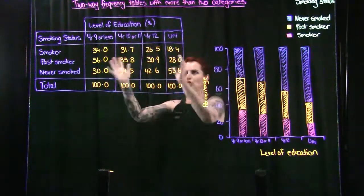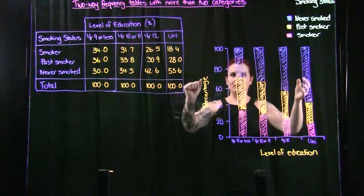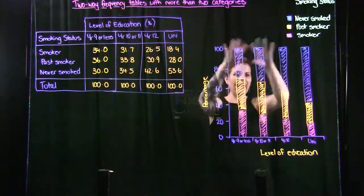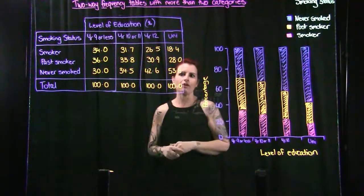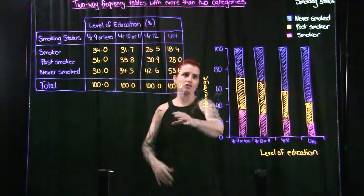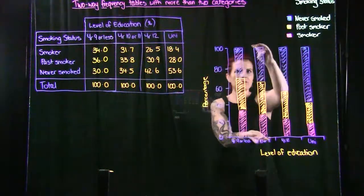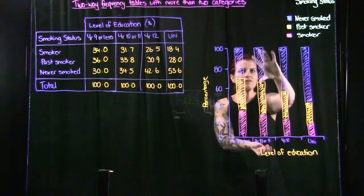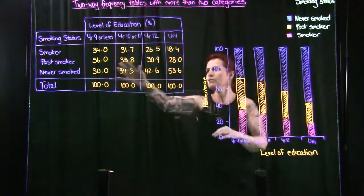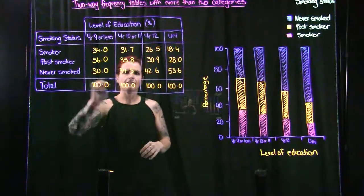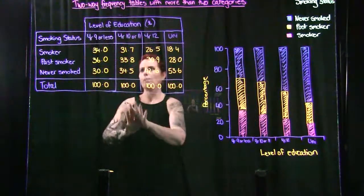We've got a two-way frequency table and a percentage frequency table, and over here a segmented bar graph. A segmented bar graph is really good when working with percentages — each of these bars represents a hundred percent, but we've segmented them out for the three different smoking statuses.